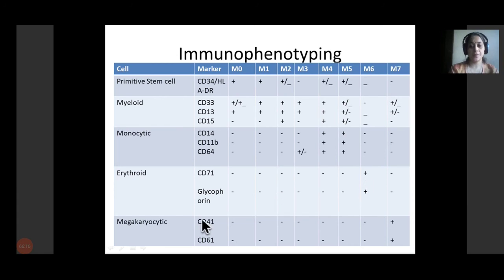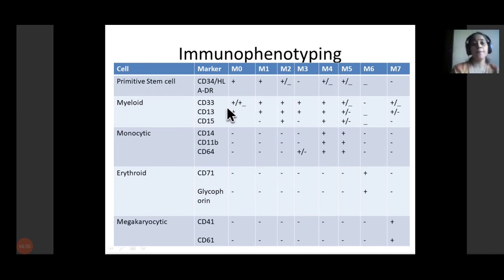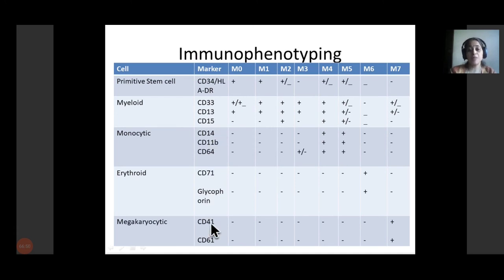On the immunophenotype chart: CD71 and glycophorin are positive only in M6. CD41 and CD61 are positive only in M7. CD34 and HLA-DR are very commonly positive in M0. Myeloid markers include CD13, CD33, CD15; monocytic markers include CD14, CD11b, CD64, and CD16. These markers are all included in the acute leukemia panel; CD71 and glycophorin are added when erythroid morphology is suspected.